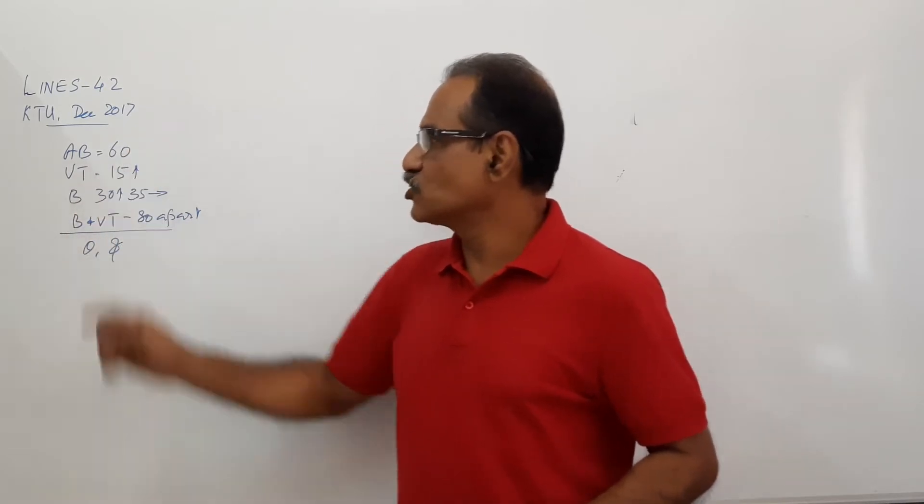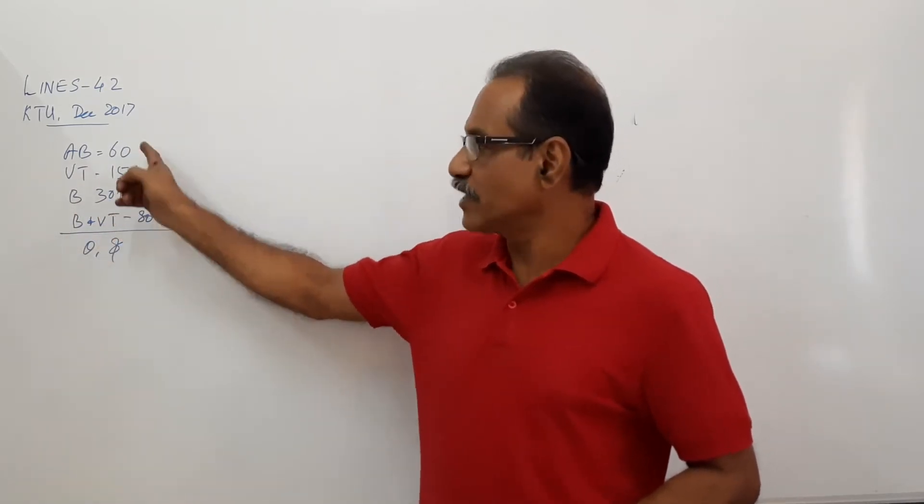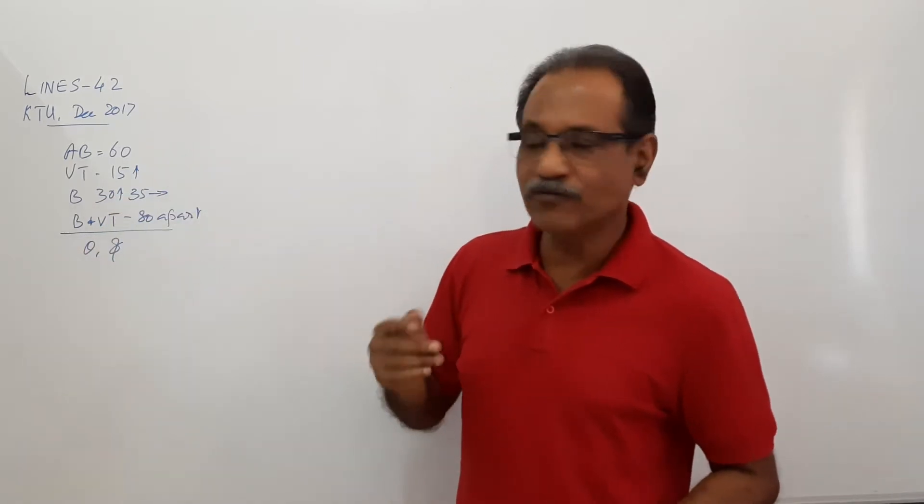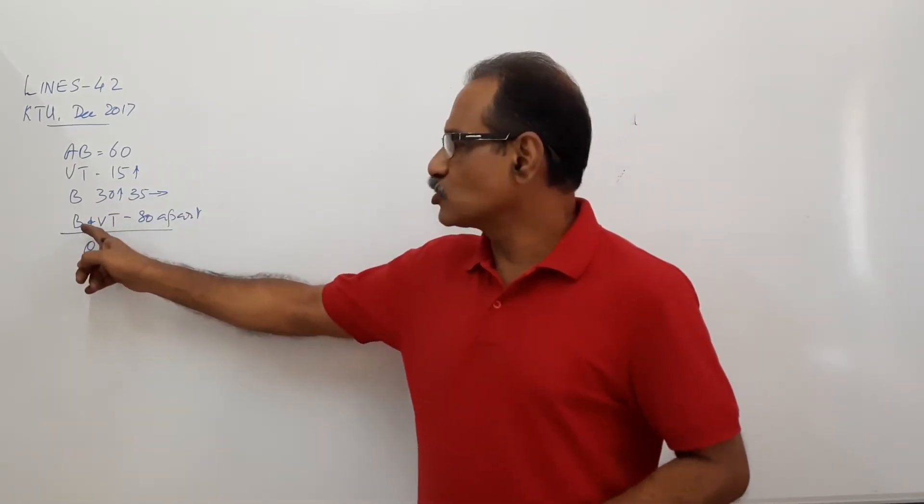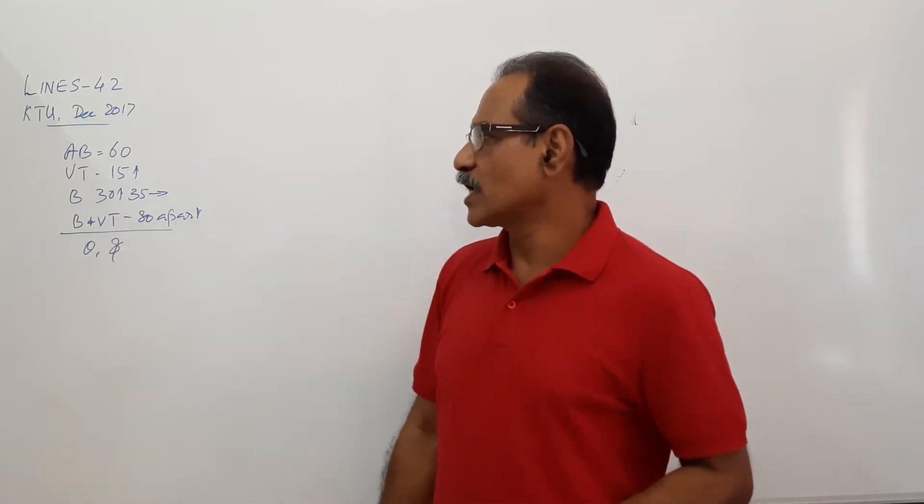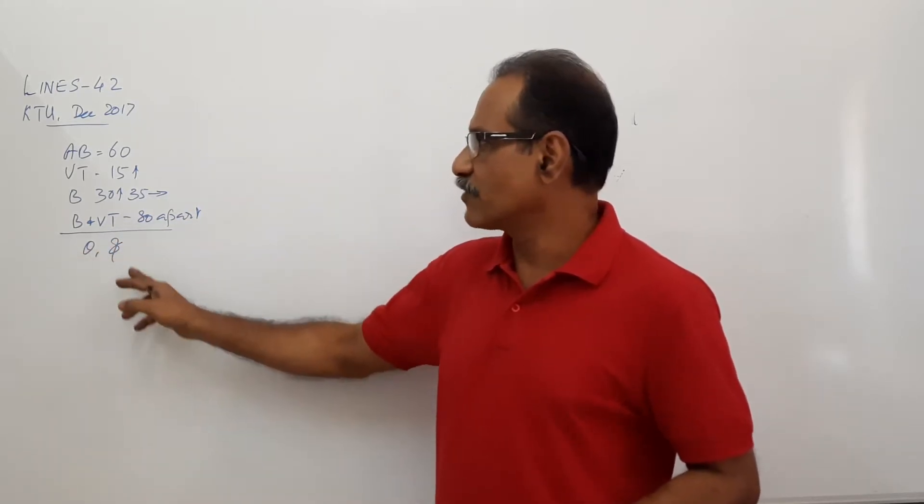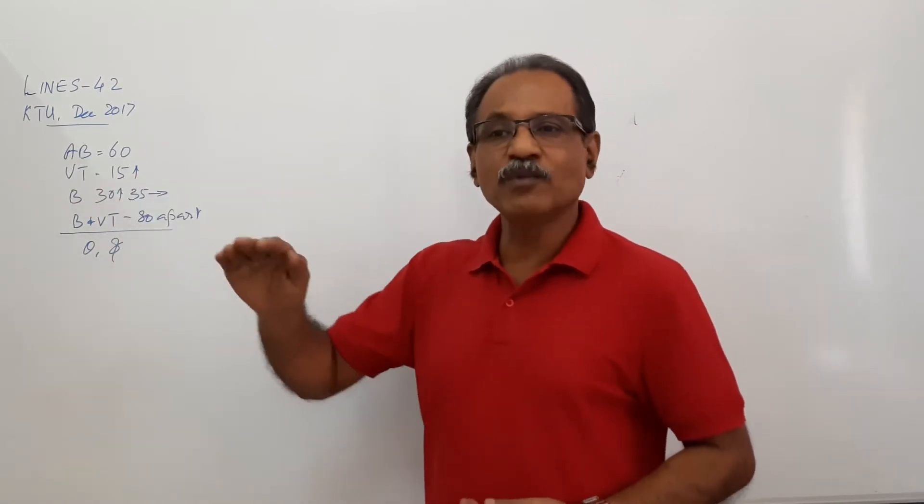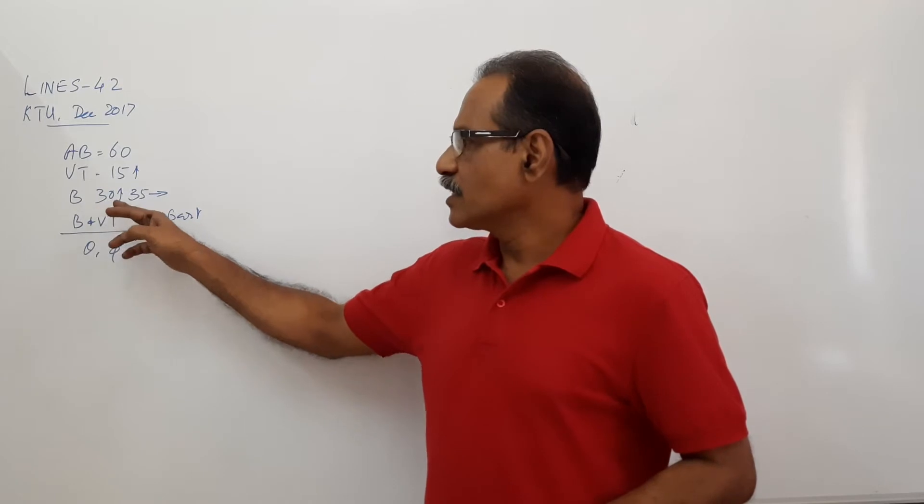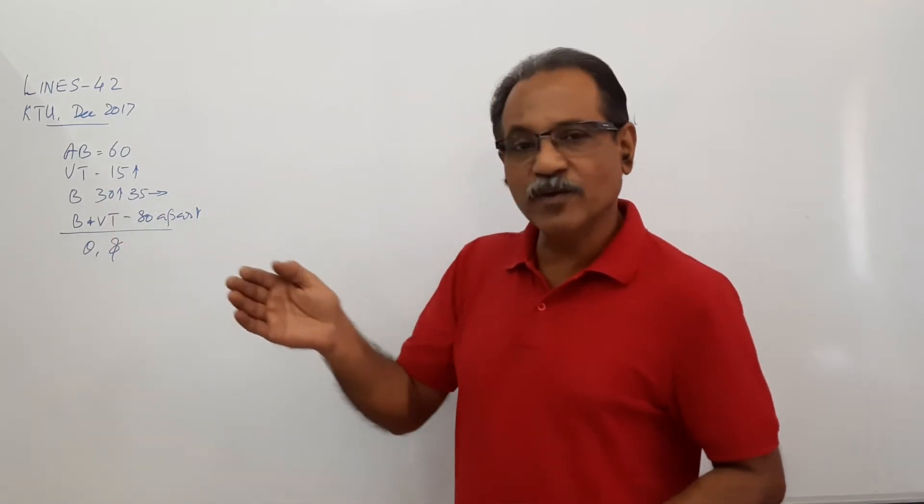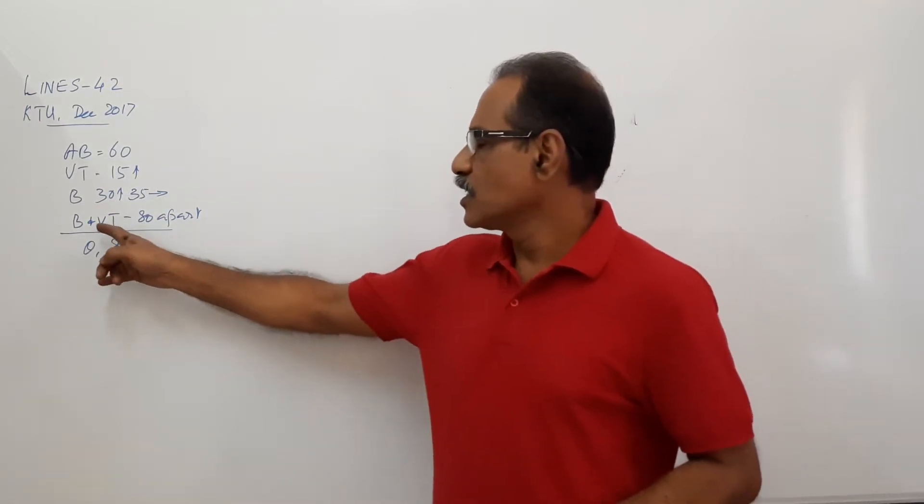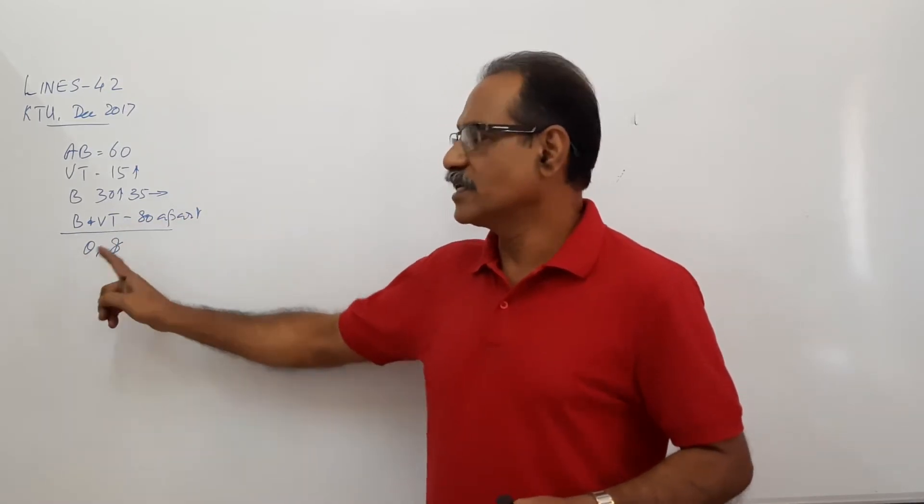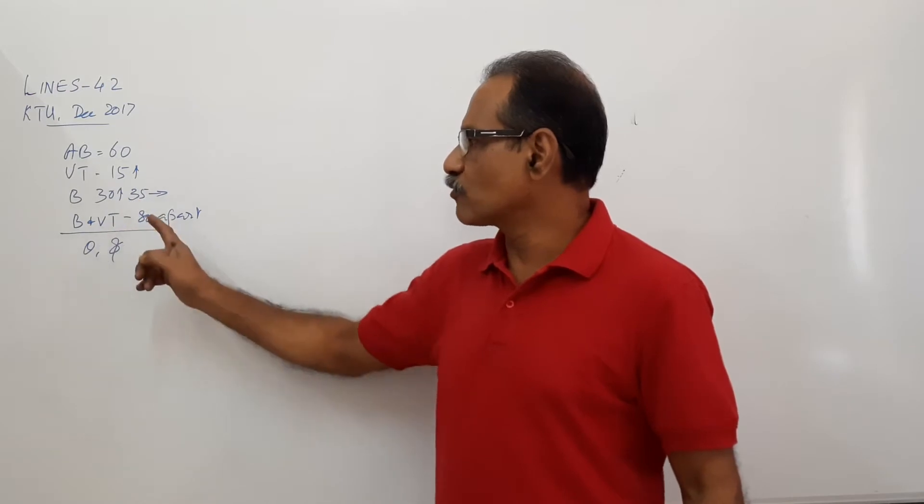True length of a line AB is 60mm, its VT is 15mm above HP, B is 30mm above HP and 35mm in front of VP. The projectors through B and VT are 80mm apart. You are asked to draw the projections and find out theta and phi.